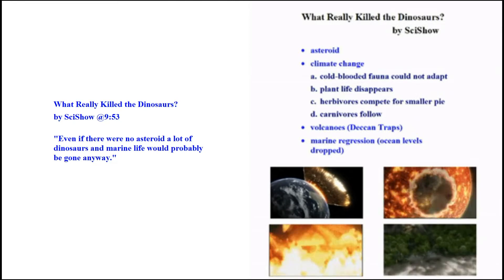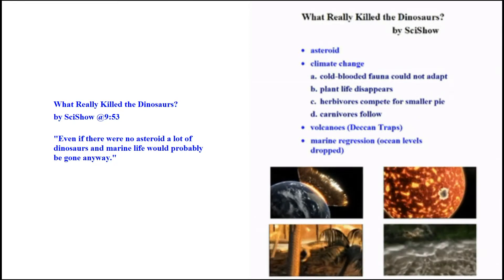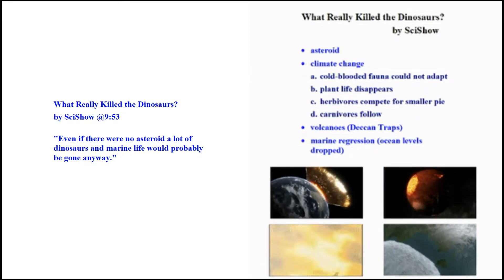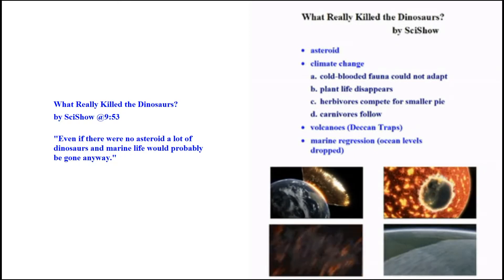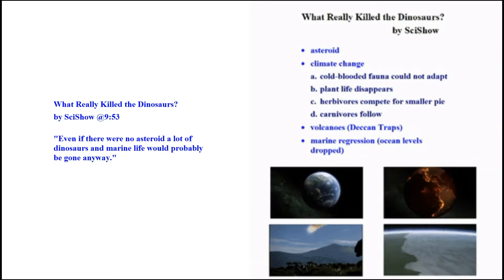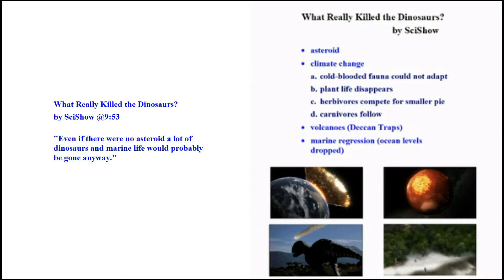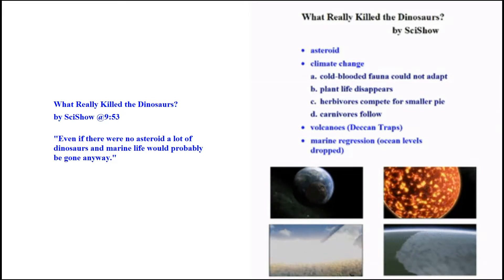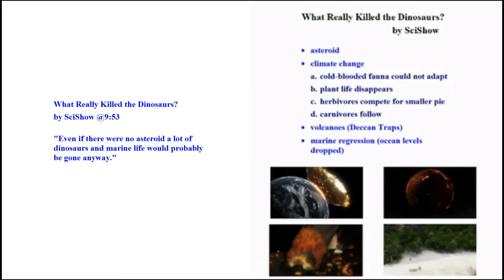He starts out by saying the asteroid is the number one theory, then there could be climate change for different reasons — maybe volcanoes, the Deccan Traps in India, or maybe marine regression, where ocean levels dropped. You should conclude that these people keep telling you the same story over and over for the last 50 years. They have no different theory. If you want a different theory, you have to come here. The theory here is that the economy collapsed — the dinosaurs' economy collapsed.